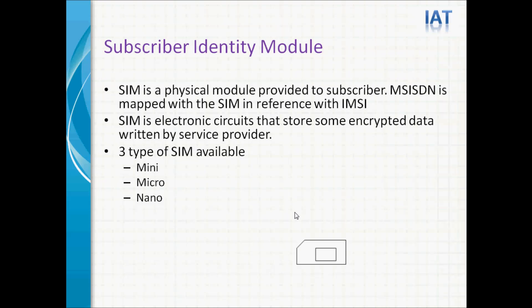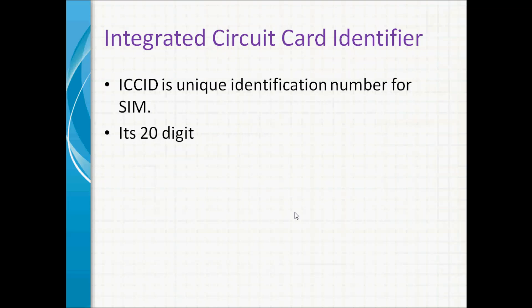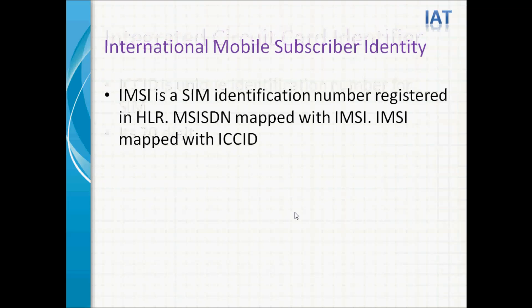Subscriber Identity Module — SIM is a physical module provided to the subscriber. MSISDN is mapped with this SIM in reference with IMSI. SIM is an electronic circuit that stores some encrypted data written by the service provider. In the market, three types of SIM are available: Mini, Micro, and Nano. ICCID — Integrated Circuit Card Identifier — is a unique identification number for the SIM, and it is a 20-digit number. IMSI — International Mobile Subscriber Identity — is a SIM identification number registered in HLR. MSISDN is mapped with IMSI, and IMSI is mapped with ICCID.